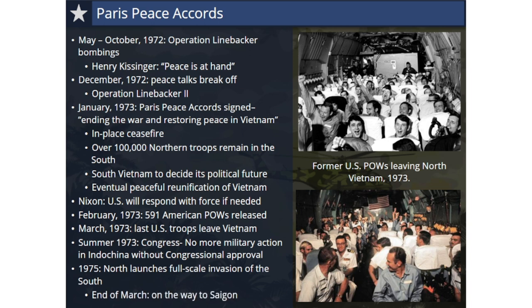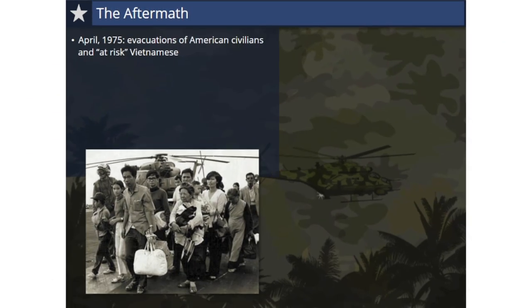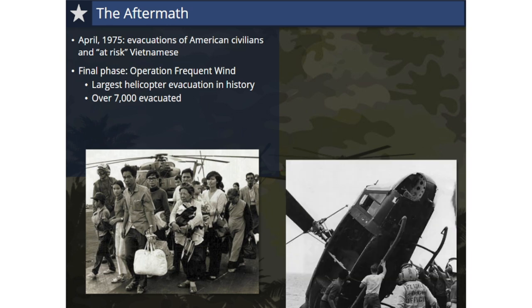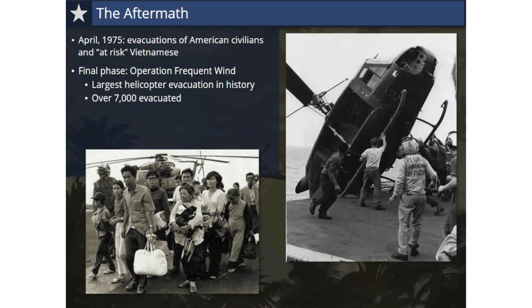By the end of March 1975, Northern forces were on their way to the South's capital of Saigon. As Northern forces headed to Saigon in April 1975, the U.S., under the direction of President Gerald Ford, began a series of operations to evacuate American civilians and Vietnamese whose lives would be in danger when the North took over. Over 50,000 were evacuated by commercial airlines and military planes. Tens of thousands of Vietnamese evacuated themselves by cramming into vessels and fleeing to ships waiting offshore. The final phase was called Operation Frequent Wind, the largest helicopter evacuation in history, which resulted in over 7,000 people being evacuated throughout Saigon in just 19 hours.